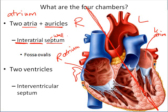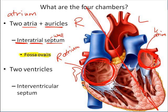The interatrial septum literally means the wall between the two atria. In this picture it's difficult to see because of the three-dimensional structure of the heart, but there is a wall between this chamber and this chamber over here. In that interatrial septum there is actually a hole that has been filled with scar tissue, and that hole filled with scar tissue is called the fossa ovalis.